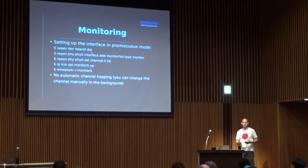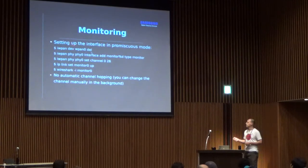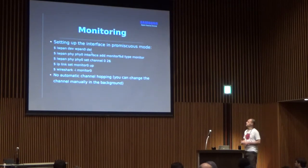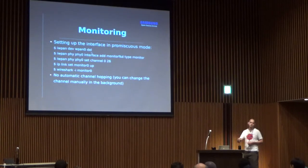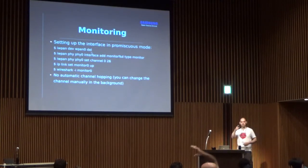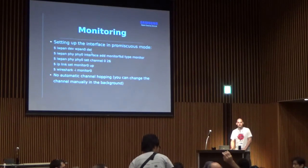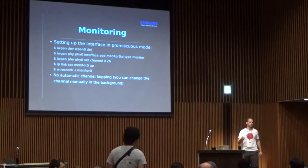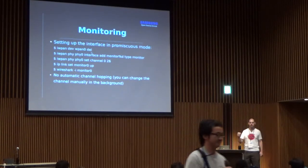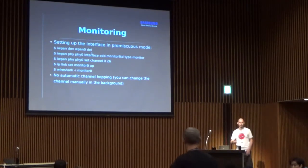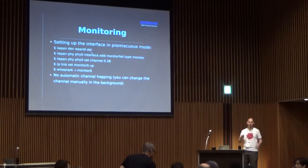For a monitor or sniffing setup, rather than deleting the automatically created interface you bring up a monitor-type device, set your channel, bring it up, and run Wireshark or tcpdump. There's no automatic channel hopping, but you can change the channel while the device is up to scan. Someone asked if Wireshark can decode the header compression — yes, Wireshark has support for all those things. There may be some gaps, but generally it does, and I have a demonstration on my laptop to show.